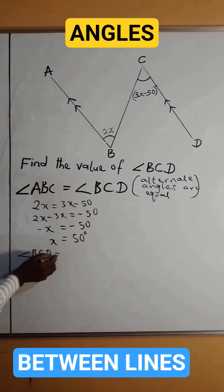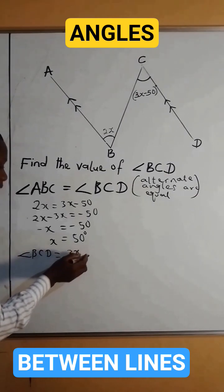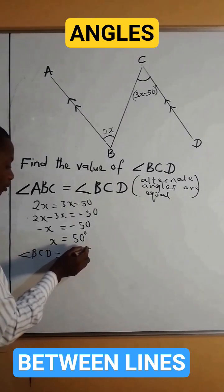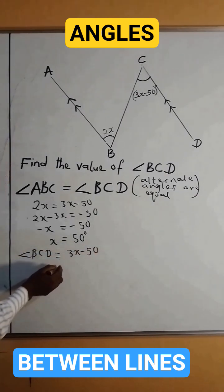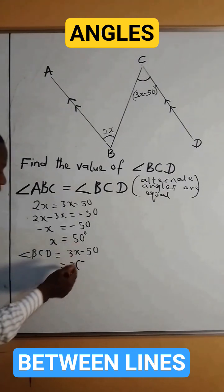Angle BCD equals 3x minus 50. So if we substitute for x, we are going to have 3 times x, where x is 50.